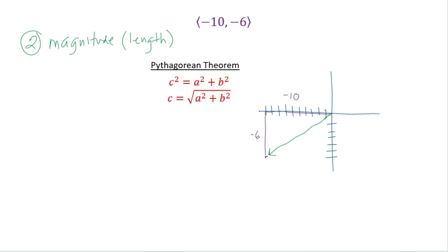So we're trying to find the hypotenuse. So the formula for finding the length of the vector is the square root of a squared plus b squared, which is like the Pythagorean theorem.